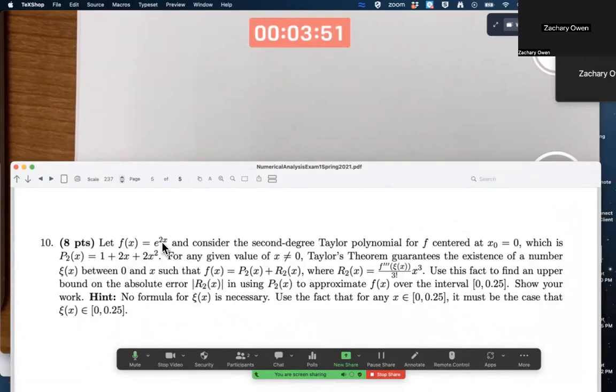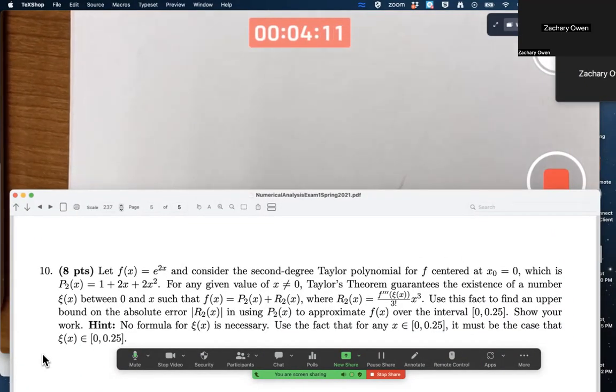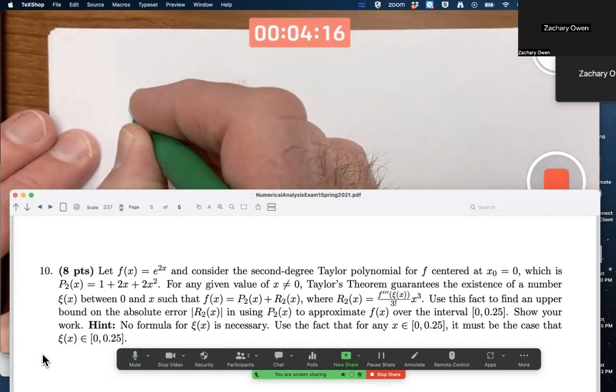So f of x is e to the 2x, and we're considering the second degree Taylor polynomial of f centered at zero. You should be able to calculate Taylor polynomials. That's a calculus two kind of question. Let's just confirm the answer first of all.